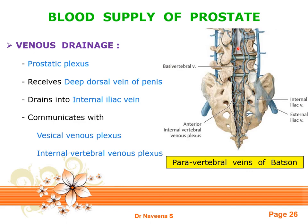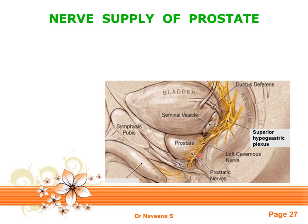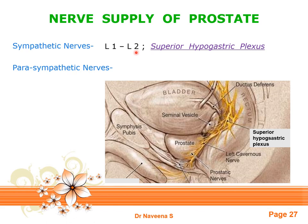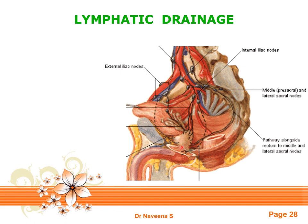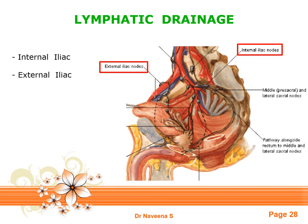The prostate gland is innervated by the autonomic nervous system. Sympathetic nerves come from the superior hypogastric plexus, derived from L1 and L2 spinal cord segments. Parasympathetic nerves come from the pelvic splanchnic nerves, derived from S2, S3, and S4 spinal cord segments. Lymphatic drainage from the prostate gland diverges along different vessels and drains into three groups of lymph nodes: internal iliac, external iliac, and the sacral group, giving the gland a wide range of lymphatic drainage.